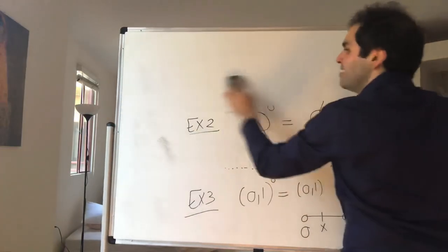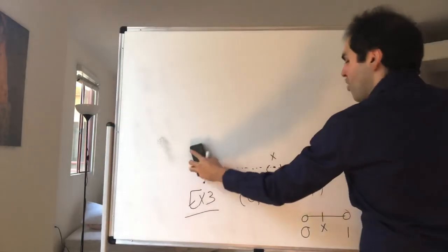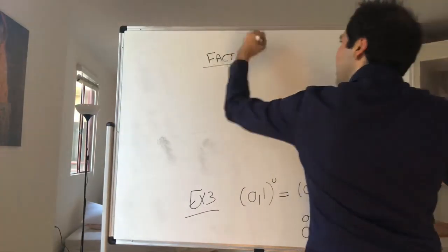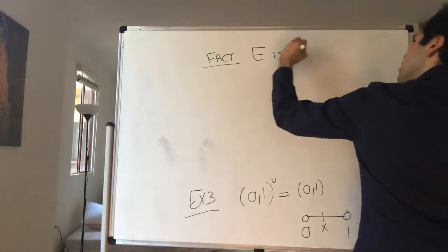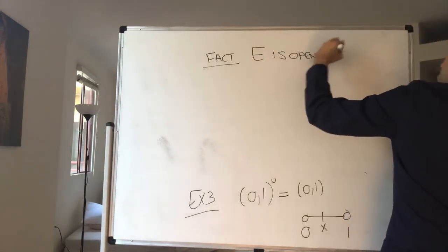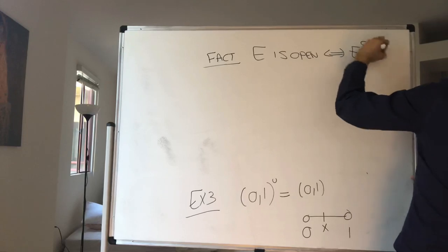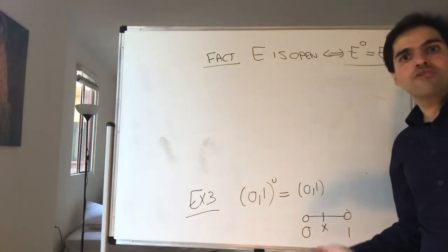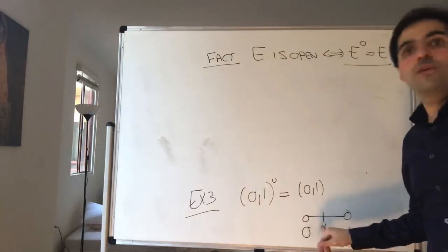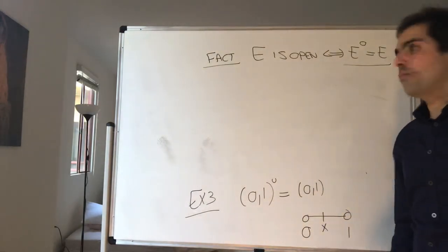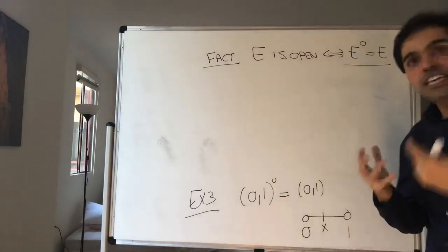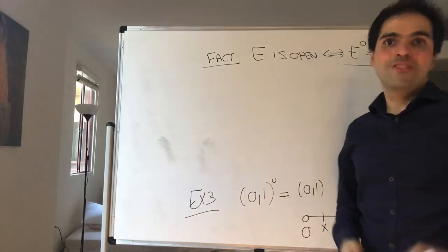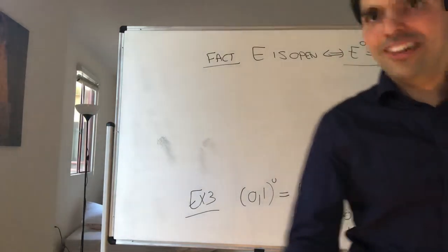For the open interval (0, 1), any point is an interior point — you can always fit a little ball. So the interior of (0, 1) is just (0, 1). In fact, this is true for any open set. Fact: E is open if and only if the interior of E equals E. Because what does it mean for a set to be open? It means no matter which point you pick, you can fit a ball — so the interior has to be the whole set. Thank you so much, and next time we'll do closed sets.